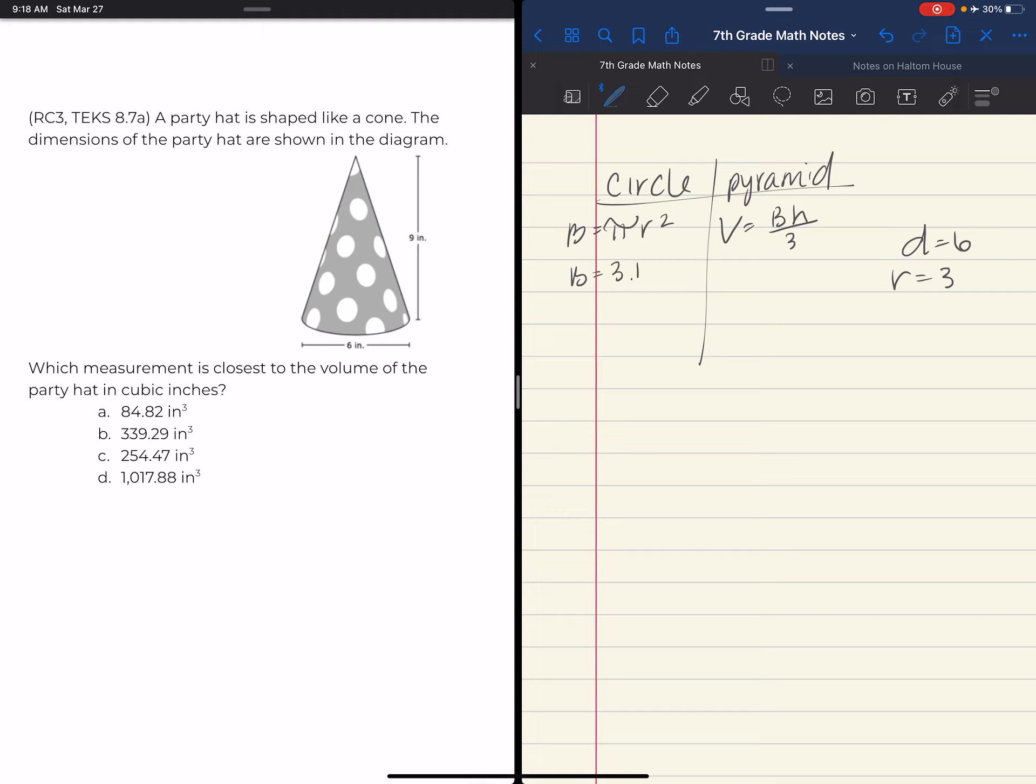So, let's plug that in. 3.14 times 3 squared. We know it to be 9, and I believe 9 times 3.14 is 28.26. We do that one a lot. It's kind of easy to just memorize it.